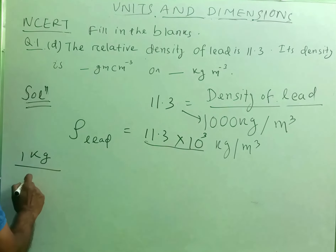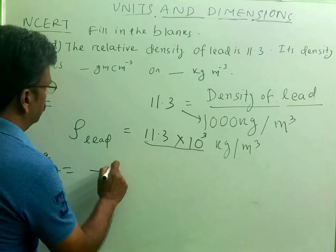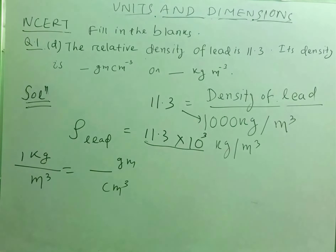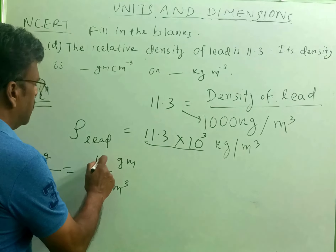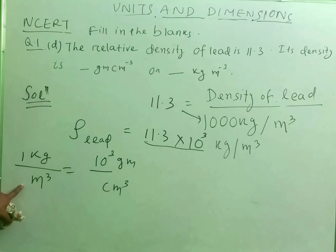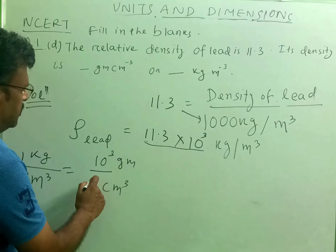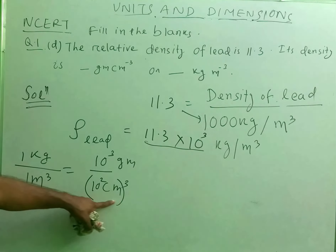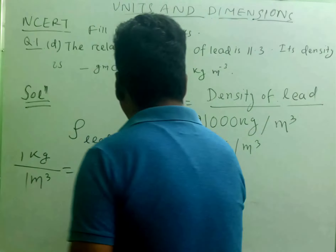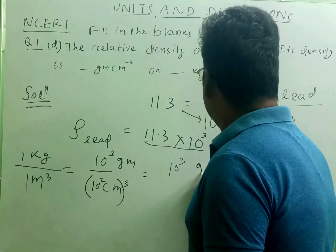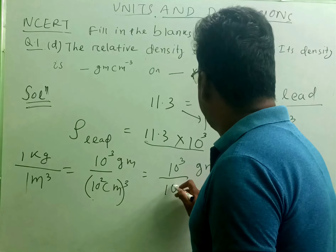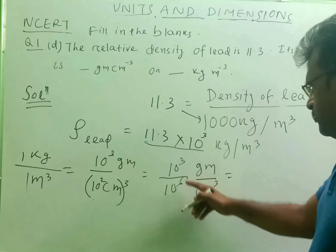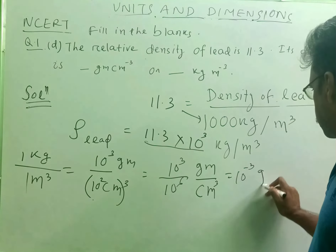Now let us see how 1 kg per meter cube relates to gram per centimeter cube. You know, 1 kg is equal to 1000 grams, or 10 to the power 3 grams, and 1 meter is equal to 100 centimeters. So we take the cube of 10 to the power 2 centimeters. This becomes 10 to the power 3 grams divided by 10 to the power 6 centimeters cube.